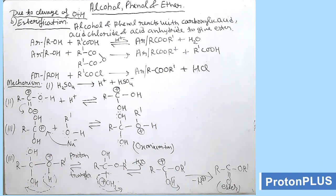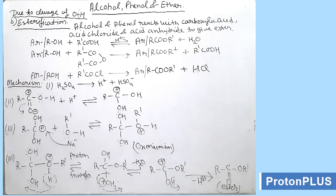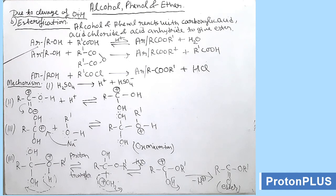In our previous video we started with cleavage of OH bond, covering the acidic nature of alcohol and phenol. Today we will take the second reaction due to cleavage of OH bond, that is esterification. Alcohol and phenol react with carboxylic acid, acid chloride, or acid anhydride to give ester. If we take aromatic or aliphatic OH group, that is ArOH or ROH, with carboxylic acid in presence of acid, the product formed is ester.